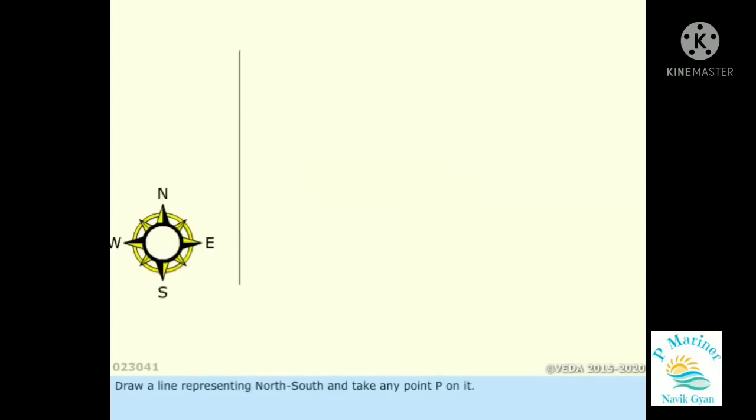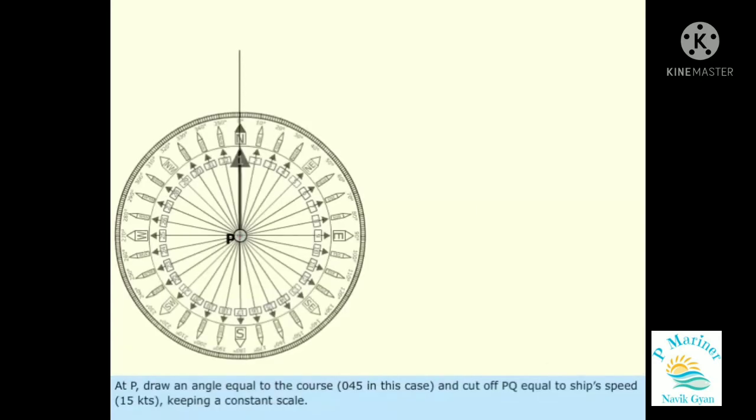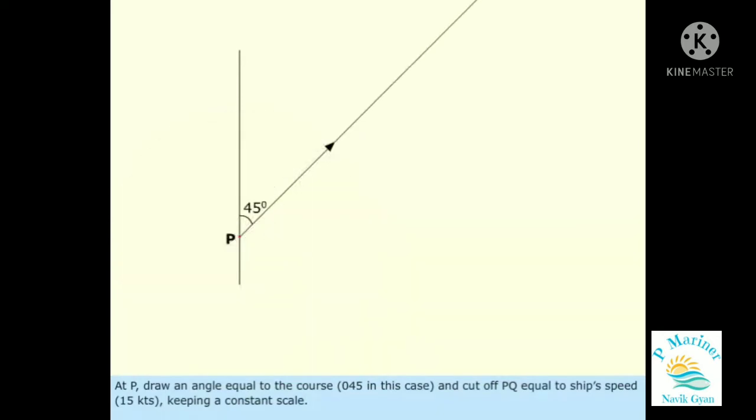Draw a line representing north-south and take any point P on it. At P, draw an angle equal to the course, 045 in this case, and cut off PQ equal to ship's speed, 15 knots, keeping a constant scale.